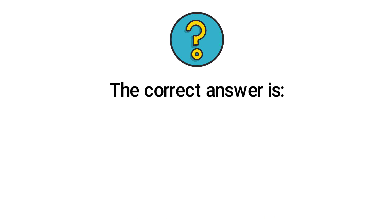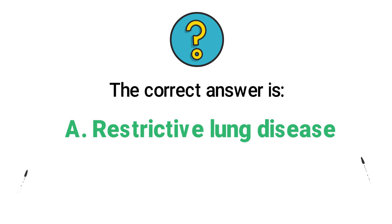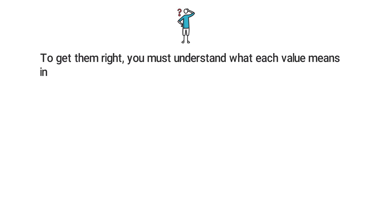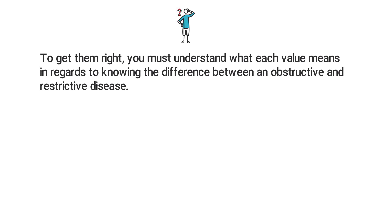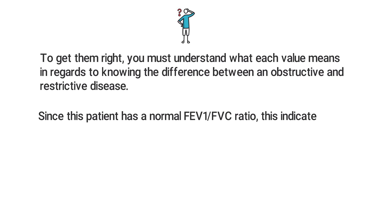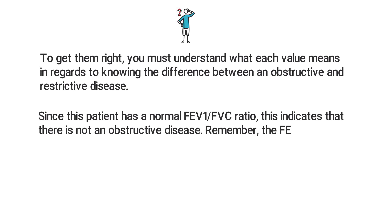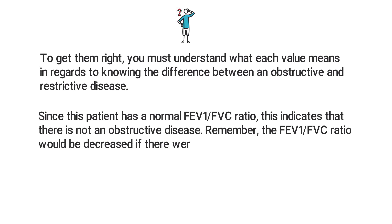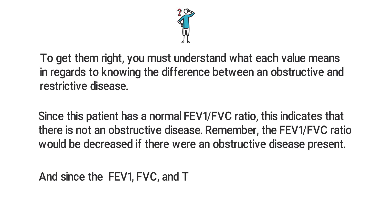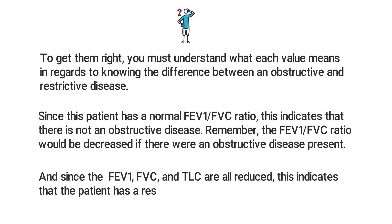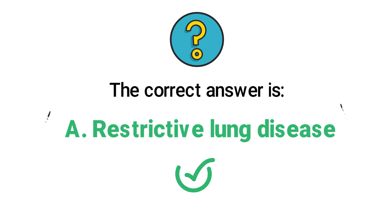The correct answer is A, restrictive lung disease. This is your typical PFT interpretation question. Since this patient has a normal FEV1 to FVC ratio, this indicates there is no obstructive disease — remember, the FEV1 to FVC ratio would be decreased if an obstructive disease were present. Since the FEV1, FVC, and TLC are all reduced, this indicates a restrictive disease.